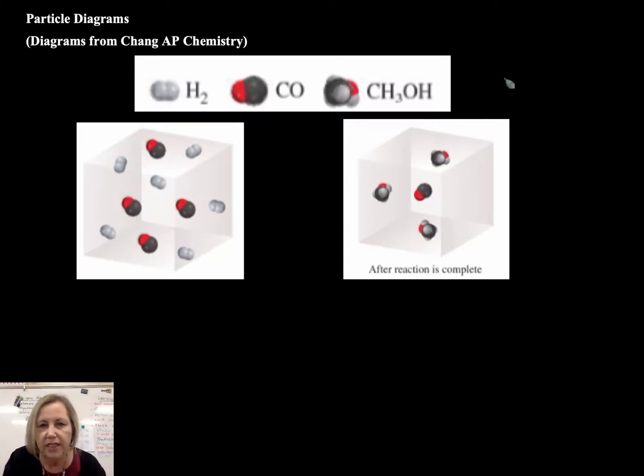So one of the first things you want to make sure is if we're going to have a particle diagram, we want to make sure that particle diagram represents a balanced chemical equation. So let's take a look at the example here. I took from just a couple of sources, primarily from my AP chemistry book, Chang, which I really like this book. It has a lot of very good particle diagrams in it.